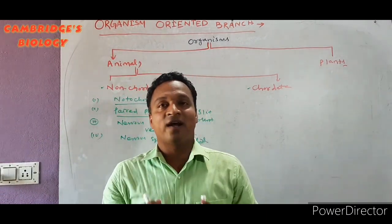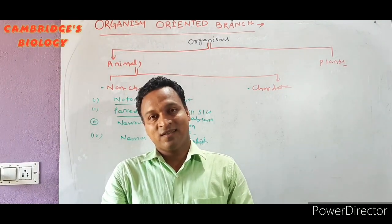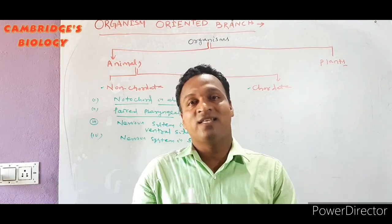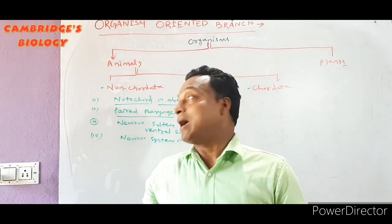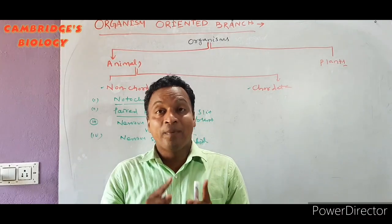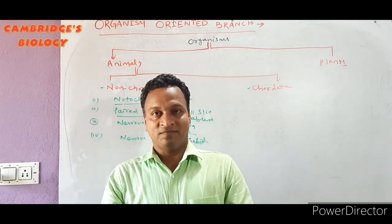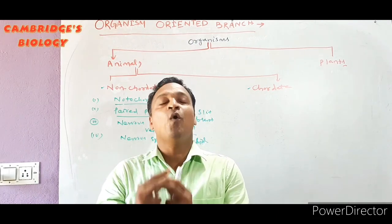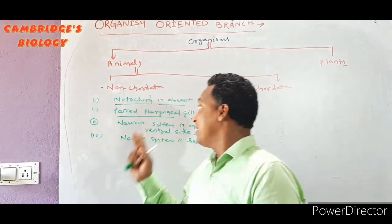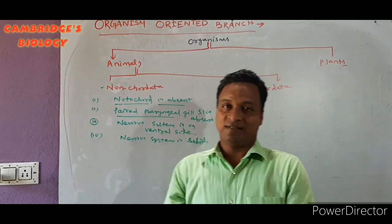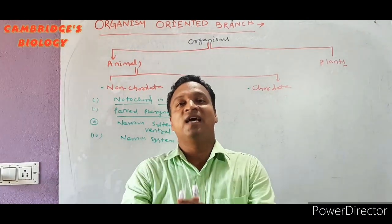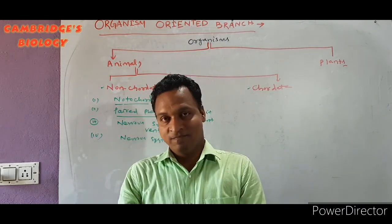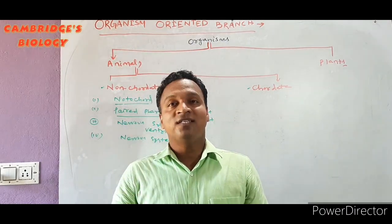In case of Non-Chordata, notochord is completely absent — it is made up of cartilage and is completely absent. Paired pharyngeal gill slits are also absent in Non-Chordata. The nervous system is placed on the ventral side.